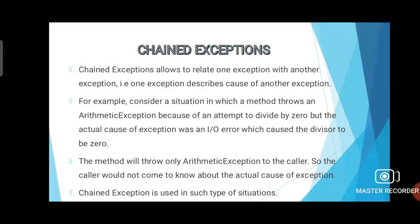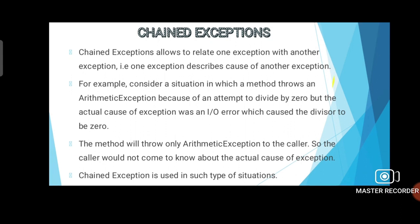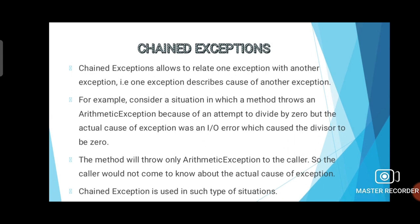Chained exceptions allow us to relate one exception with another exception — that is, one exception describes the cause of another exception. For example, consider a method that throws an ArithmeticException due to a divide-by-zero operation, but the actual cause of the exception was an I/O error which caused the divisor to be zero. The method will throw only the ArithmeticException to the caller, so the caller would not know the actual cause. Chained exceptions are used in these kinds of situations to denote the actual cause of exceptions.